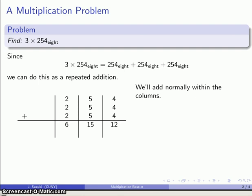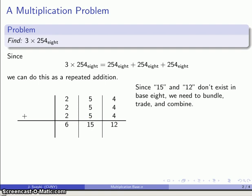And so far, so good. Except for one minor problem. We're working in base 8. So this number 12, this number 15, they don't actually exist in base 8. So I need to do some bundling, trading, and combining.